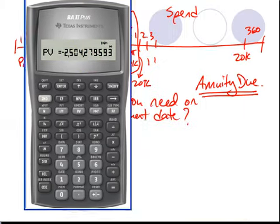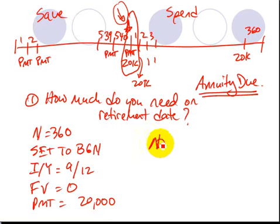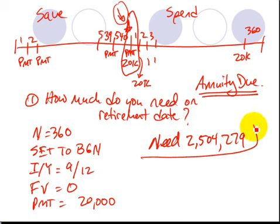So let's write that down. So basically what we've done is we've changed this problem where we have 20,000, 20,000, 20,000 for 360 periods to one where we need 2,504,279 as of this date. So let's go ahead now and switch to another sheet and show you how to do that part.